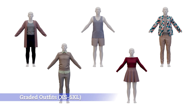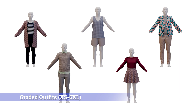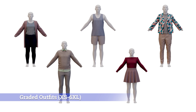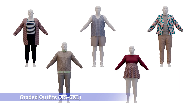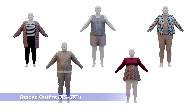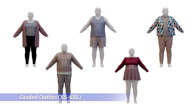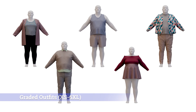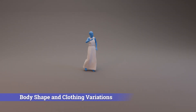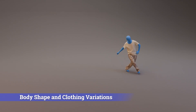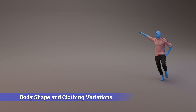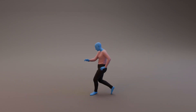Dressing people of all sizes in the appropriate clothing is important for realism and for estimating body shape under clothing. We hired a 3D clothing designer to grade 50 garments into 10 sizes. Here is an example of randomized body shape and clothing variations used in our dataset.